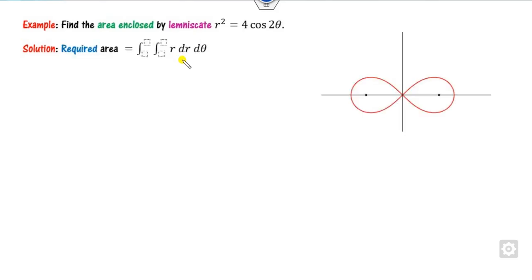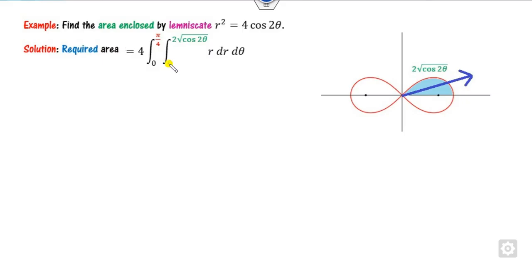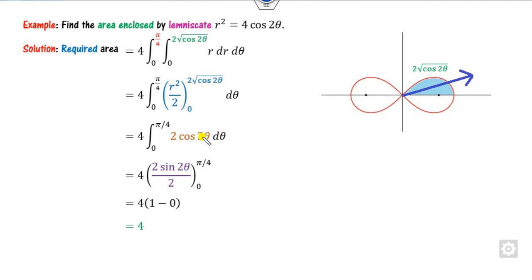Next polar example: find the area for the lemniscate r² = 4 cos 2θ. By symmetry, the area equals 4 times the first quadrant area. Draw the line from the origin. r goes from 0 to √(4 cos 2θ), and θ goes from 0 to π/4 (the maximum angle where r is defined). Integrate r²/2 = 2 cos 2θ with respect to θ from 0 to π/4 and multiply by 4 to get the required area.